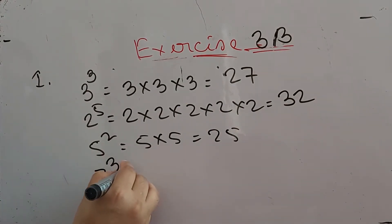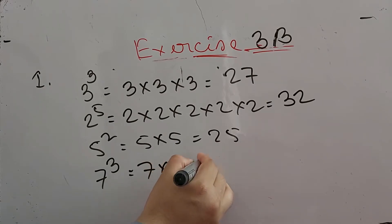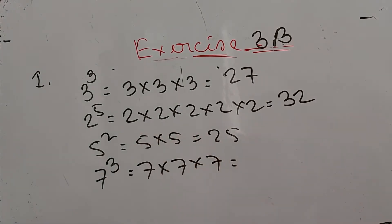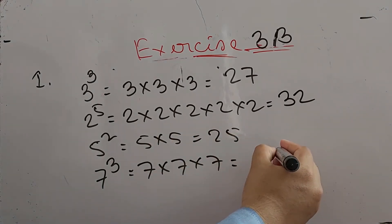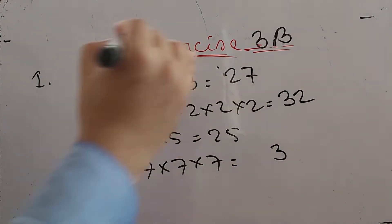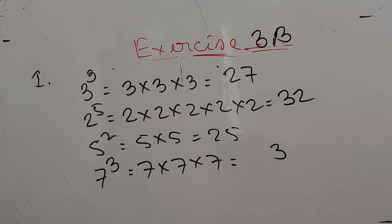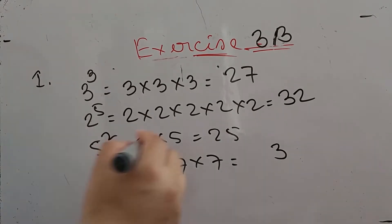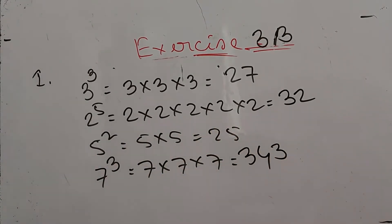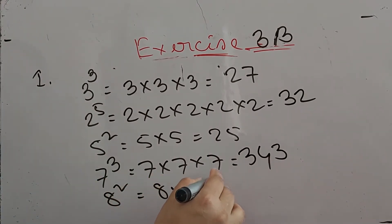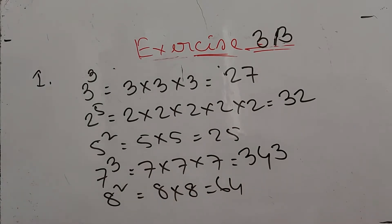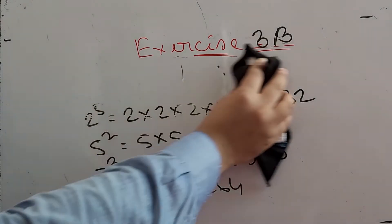Five square means five times five, that is twenty-five. Seven cube means seven into seven into seven — seven times seven is forty-nine, and forty-nine times seven is three hundred forty-three. And eight square means eight times eight, that is sixty-four.